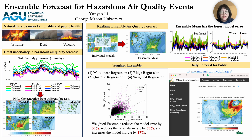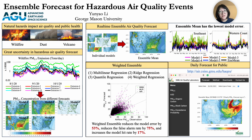The uncertainties in the forecast model input propagate in the model. Here I show a daily air quality forecast result from five widely used air quality models, including the models from NASA, NOAA, and NIL. Their forecast results look very different, which makes it difficult for decision makers to make decisions.